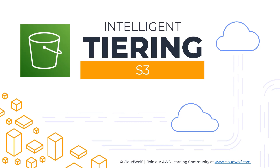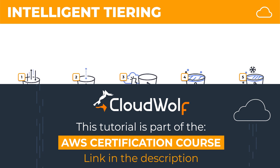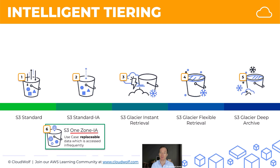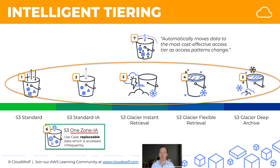Hello and welcome back to the course. Today we're talking about intelligent tiering. We've already discussed the six different classes in S3, and today we're going to introduce a seventh one called intelligent tiering. This class combines the features of these five classes. The best way to describe it is that it automatically moves data to the most cost-effective access tier as access patterns change.